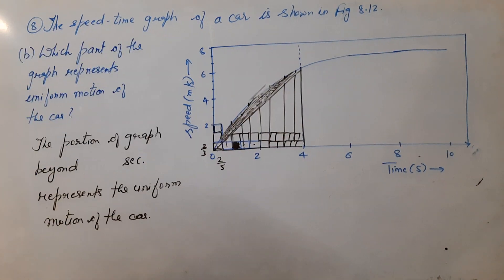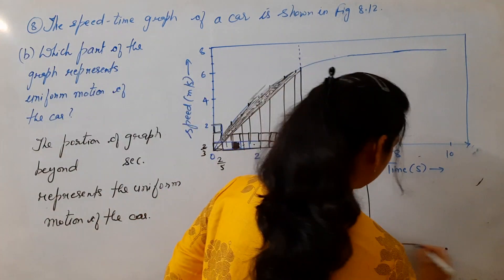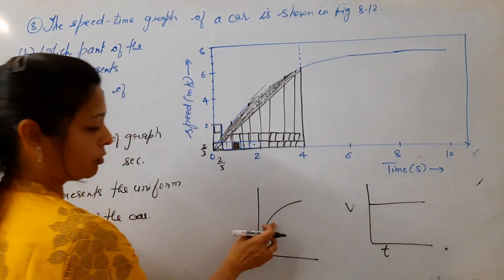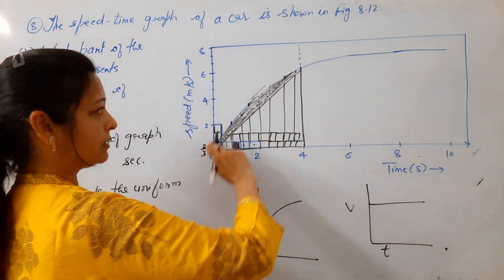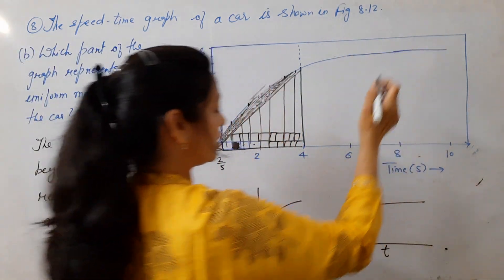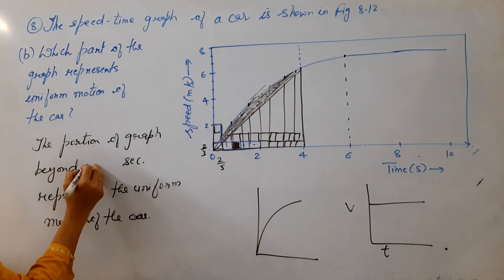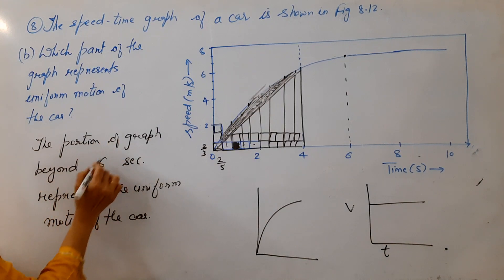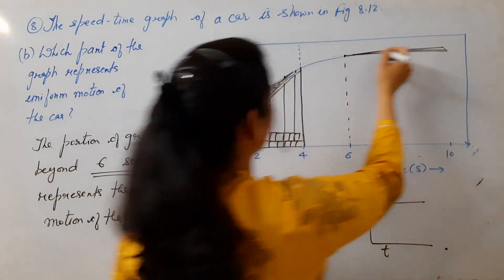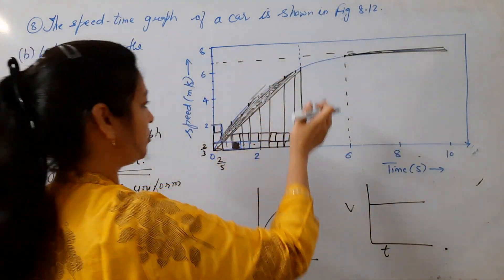Now let's do the second part. The second part asks which part of the graph represents uniform motion. On a velocity-time graph, constant velocity means a straight horizontal line — that is uniform motion. A curve represents non-uniform motion. So the curved portion from 0 to 6 seconds was non-uniform motion. If you look at the textbook figure, approximately beyond 6 seconds, the portion of the graph beyond 6 seconds represents uniform motion.